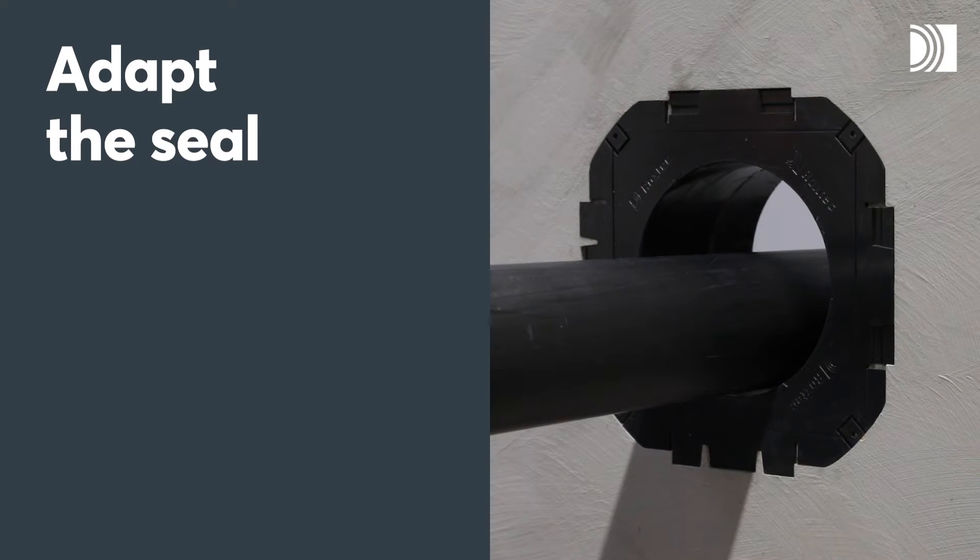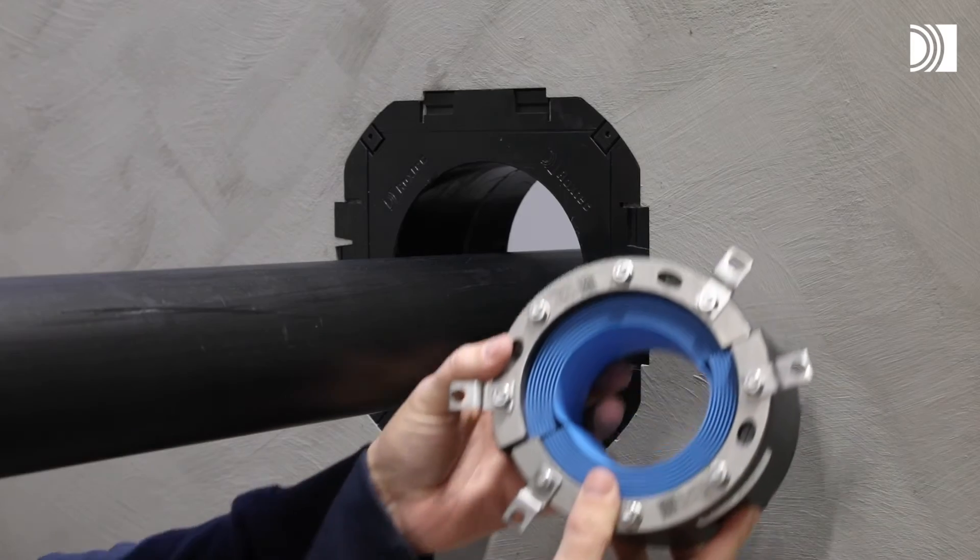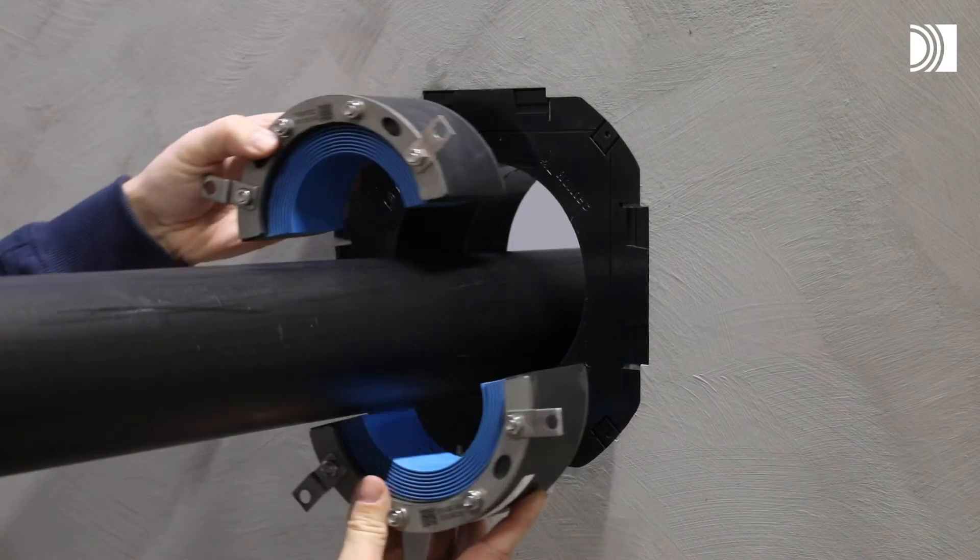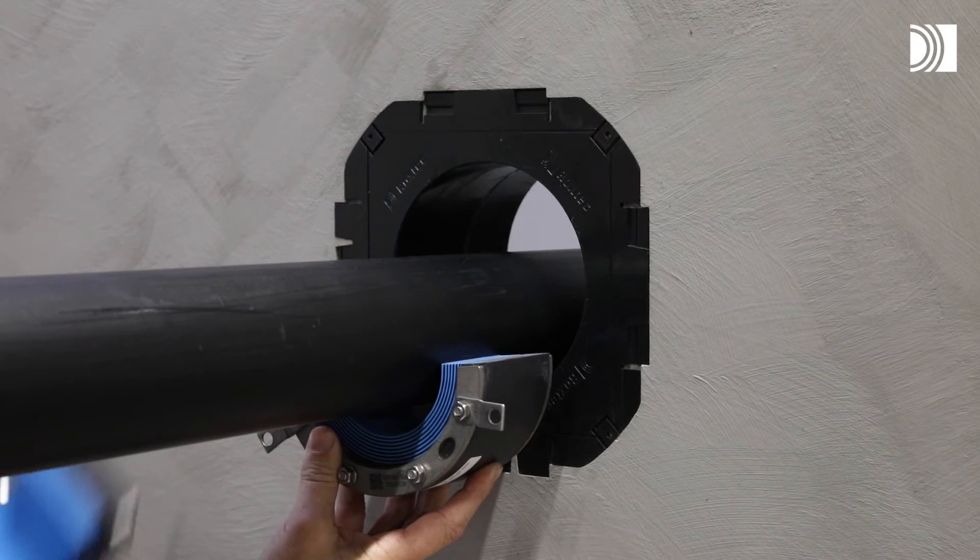Adapt the seal. Loosen all the nuts. Achieve a zero to one millimeter gap between the two halves when held against the cable or pipe.